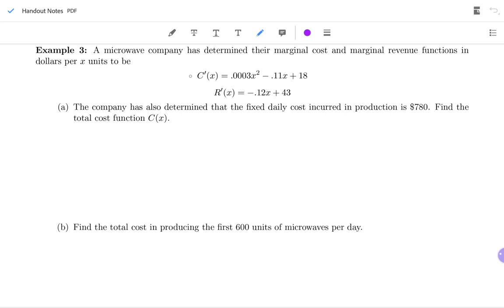So we have C prime, which is the derivative of cost. It's called marginal cost when we talk about money. And then we have R prime, the derivative of revenue, which is also called marginal revenue.